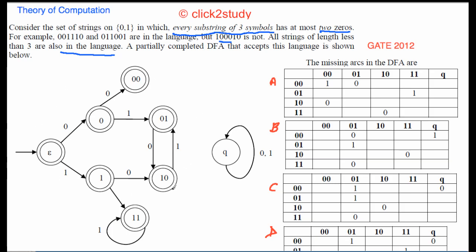A partially completed DFA that accepts this language is shown. The DFA accepts everything but rejects strings containing a substring of three or more consecutive zeros. The task is to find the missing arcs and complete the DFA.